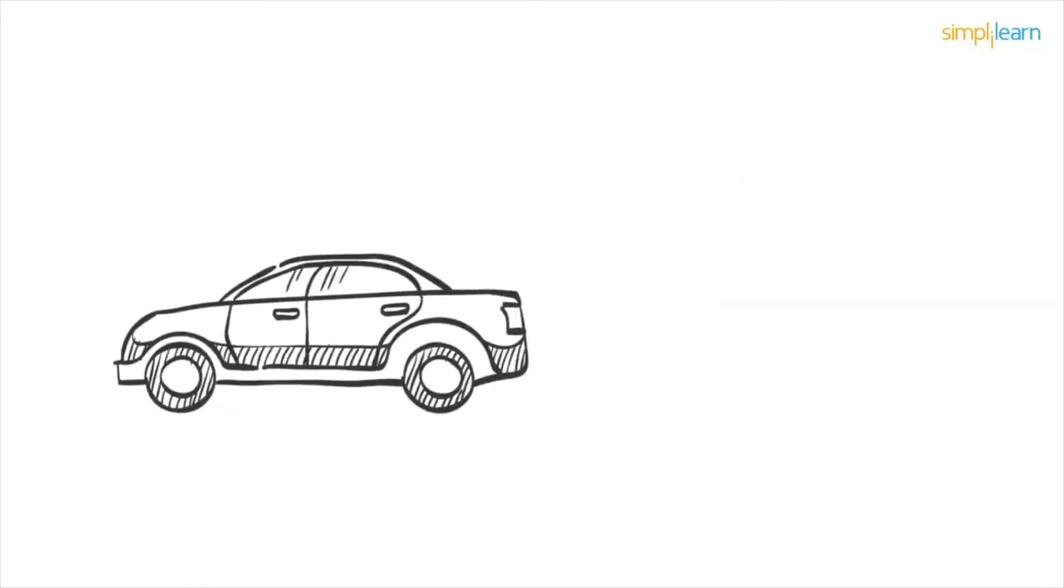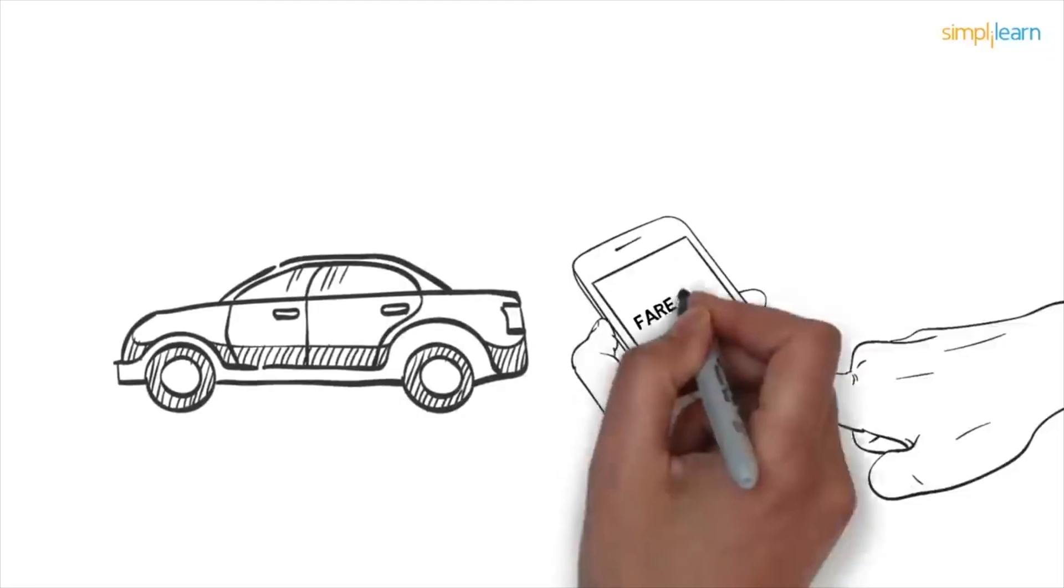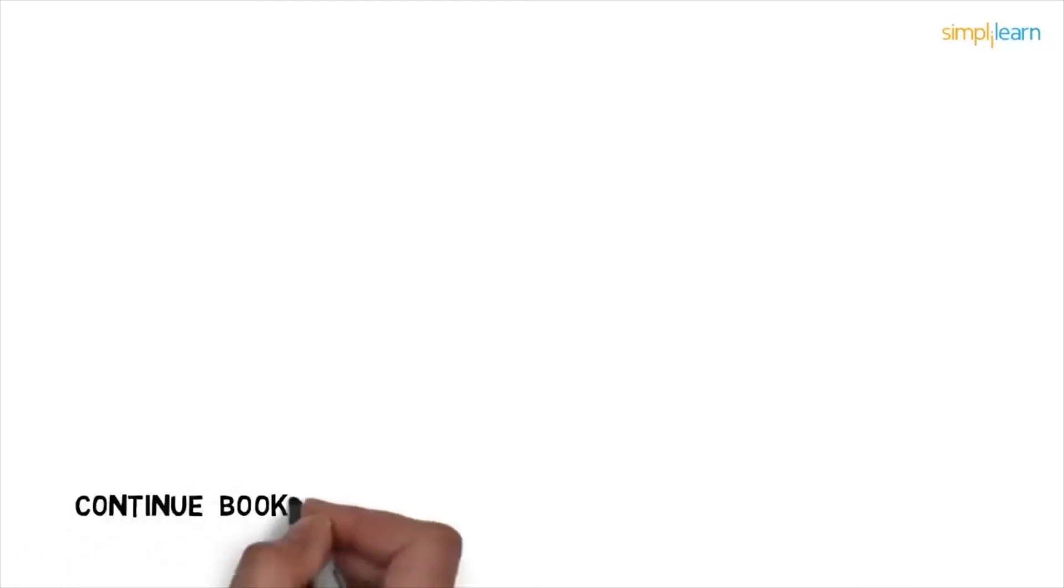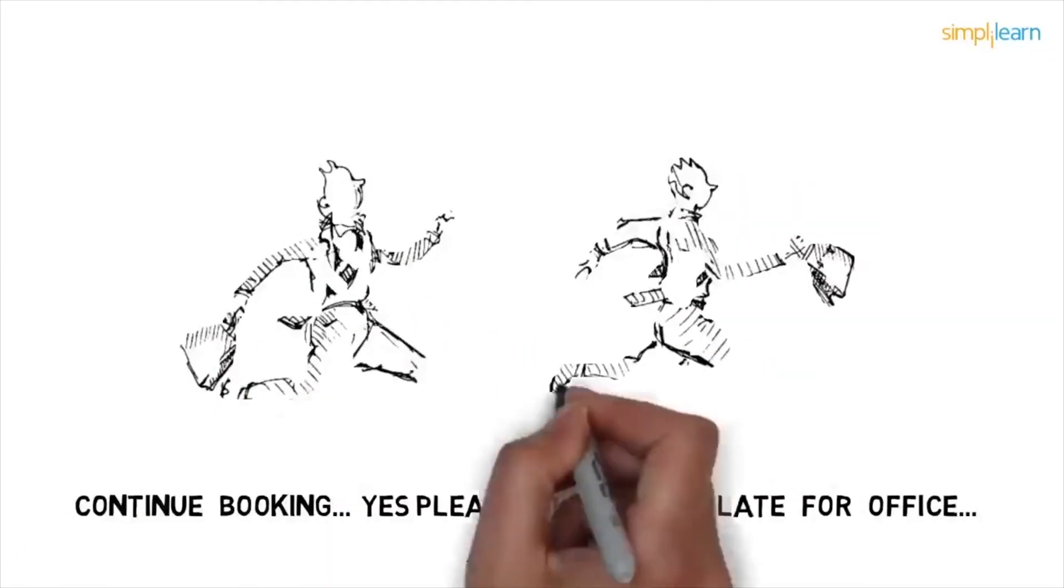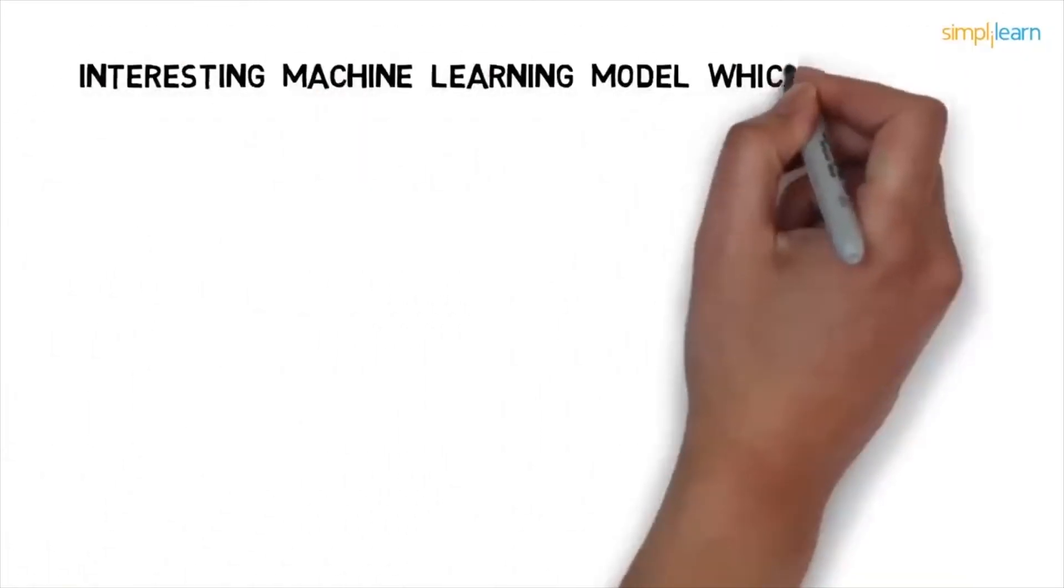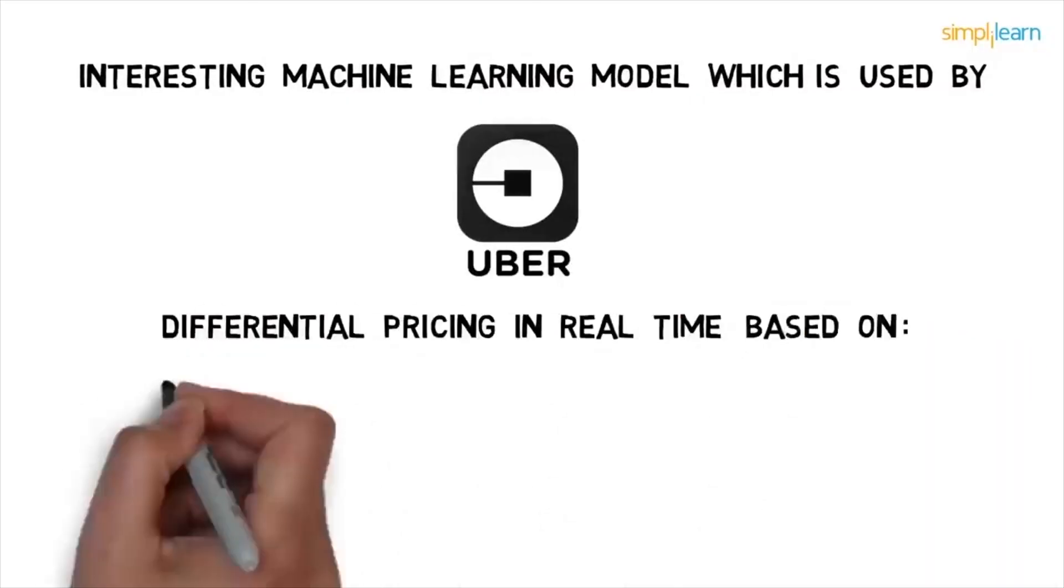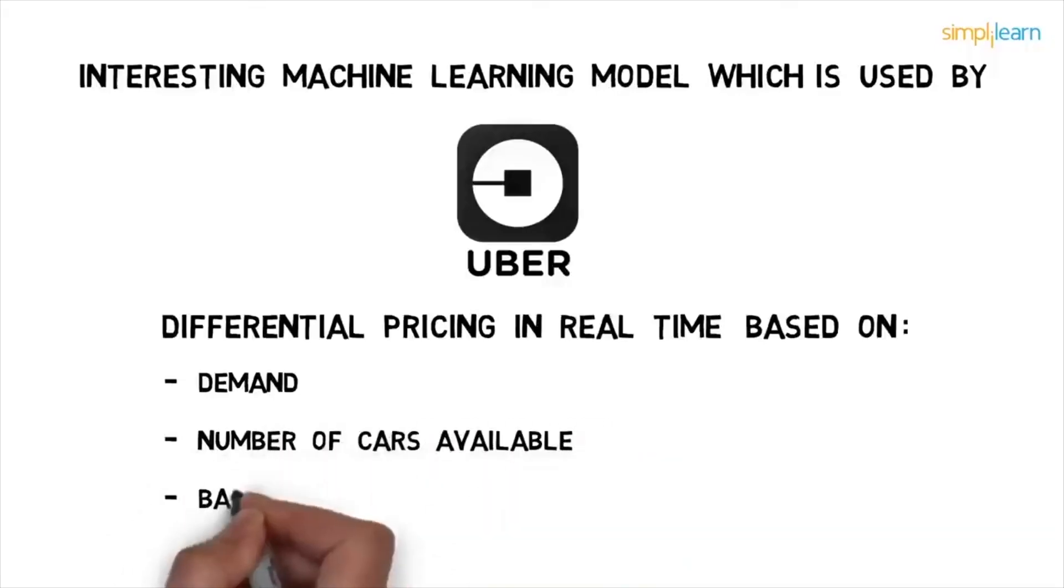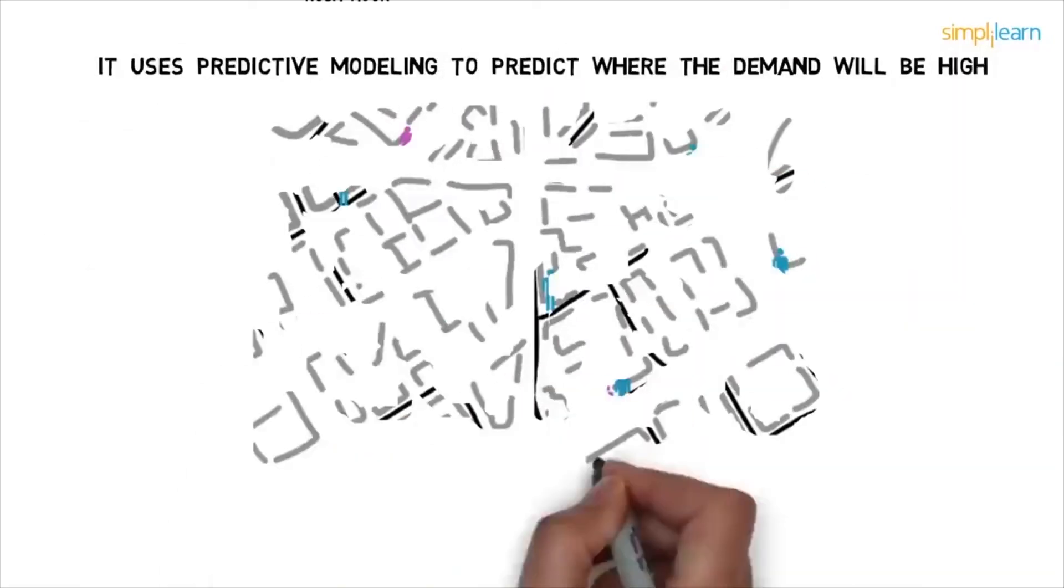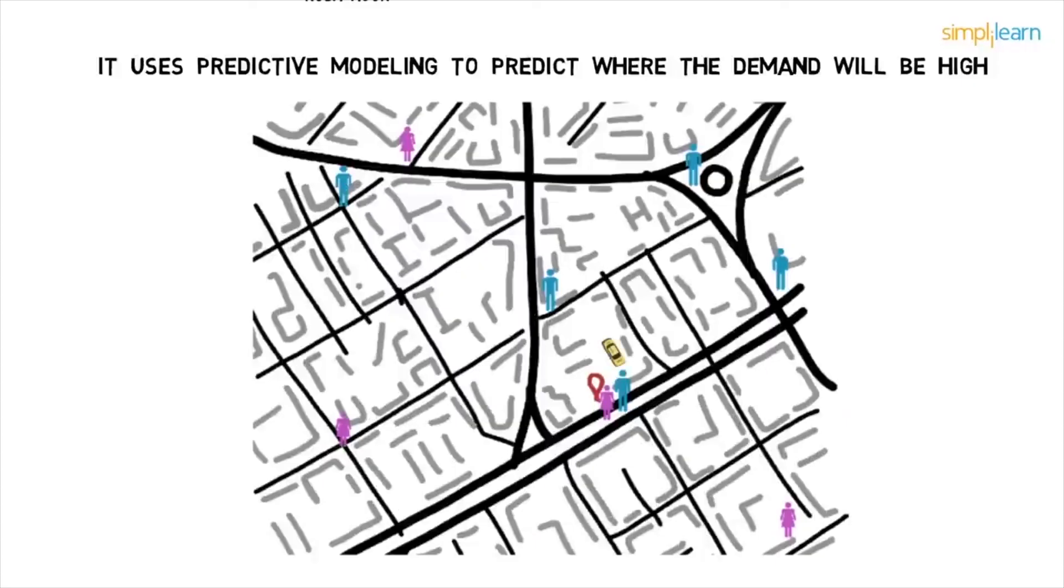While booking a cab, you must have encountered surge pricing often, where it says the fare of your trip has been updated. That's an interesting machine learning model which is used by global taxi giant Uber and others, where they have differential pricing in real-time based on demand, the number of cars available, bad weather, rush hour, etc. They use the surge pricing model to ensure that those who need a cab can get one. Also, it uses predictive modeling to predict where the demand will be high, with the goal that drivers can take care of the demand and surge pricing can be minimized.